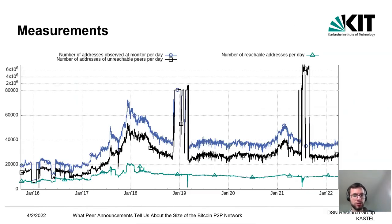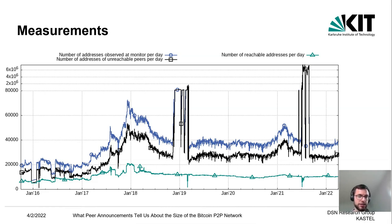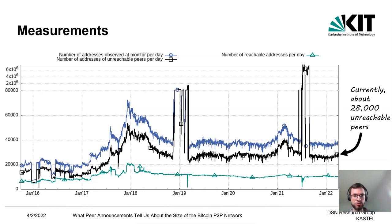We have been running a global monitor for about six years in the Bitcoin P2P network. In blue is the number of addresses the monitor observed per day, in green the number of reachable peers per day, and in black the number of addresses of unreachable peers per day. This number increases until the end of 2017, then decreases, then increases again until the beginning of 2021, decreases again, and in recent weeks has been increasing again — currently the number of unreachable peers is about 28,000.